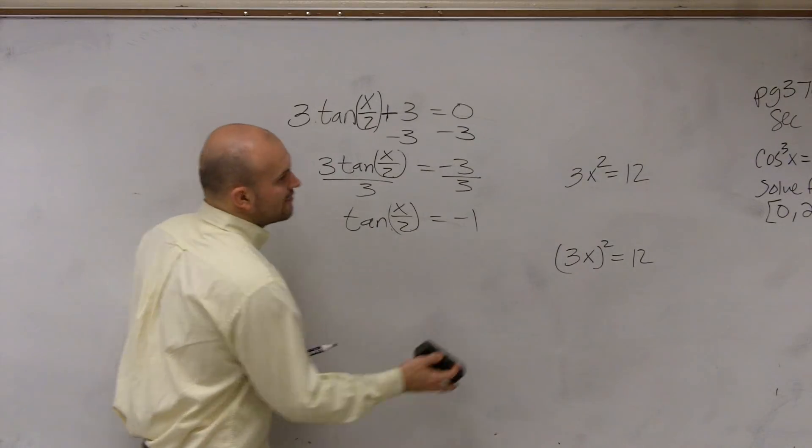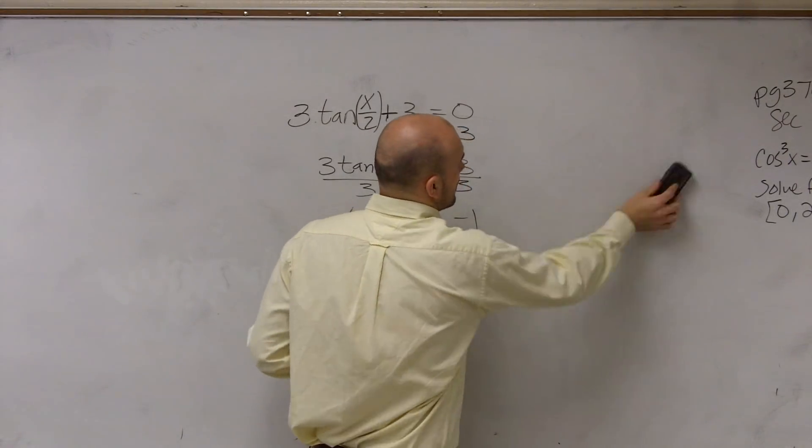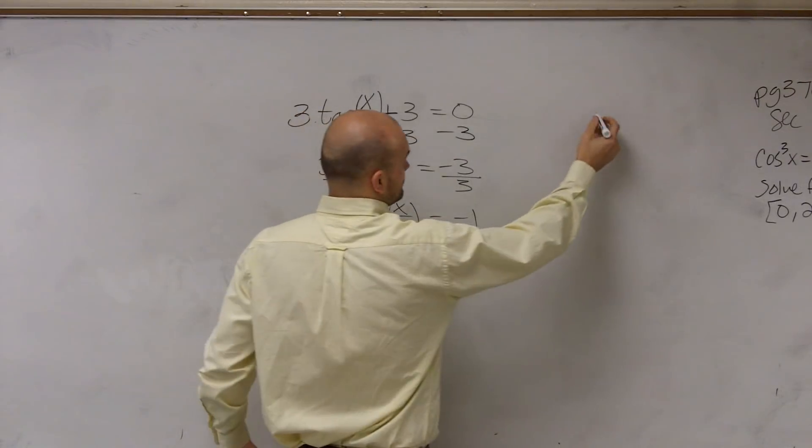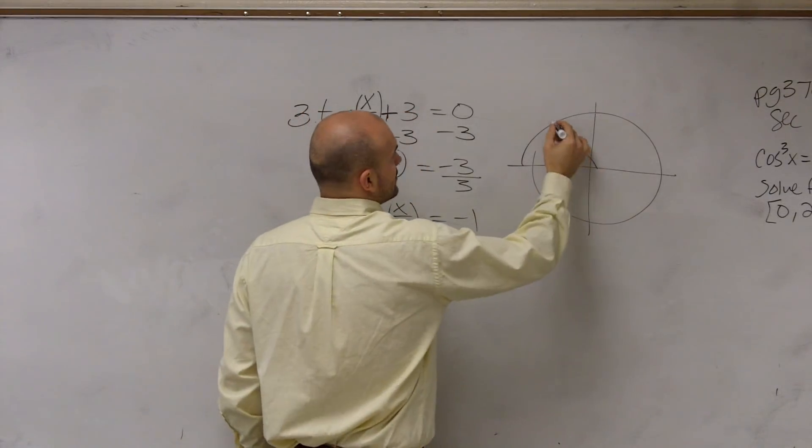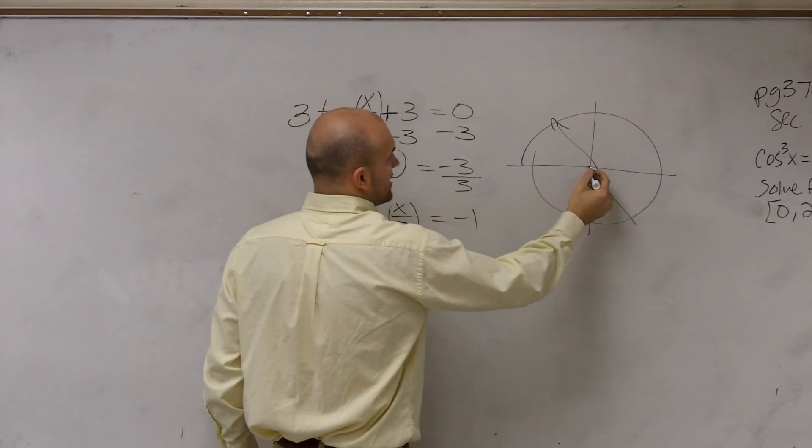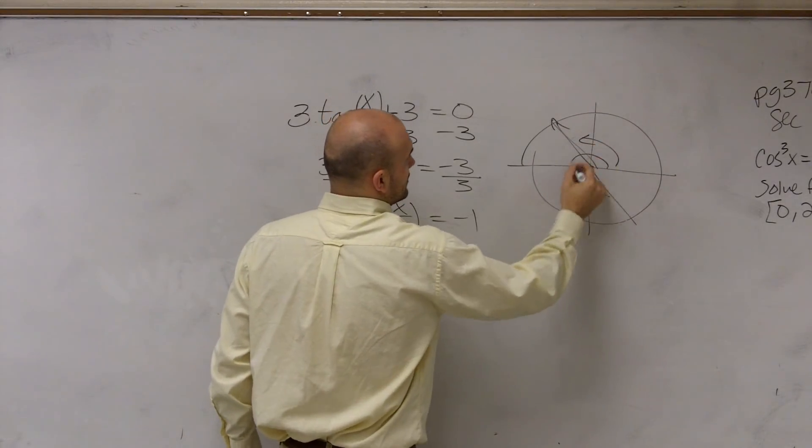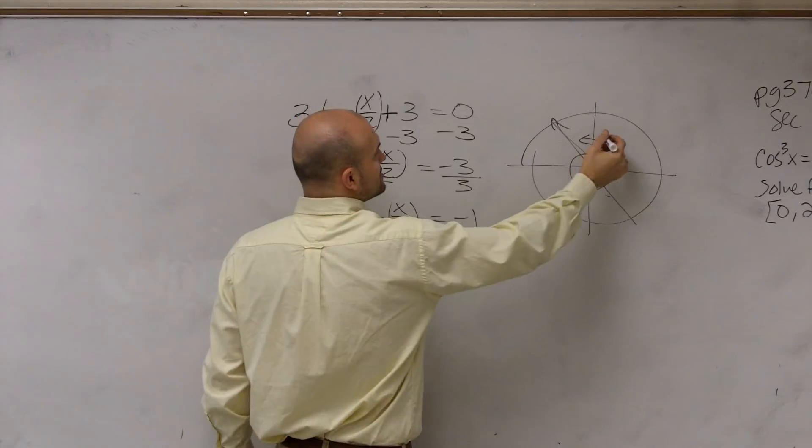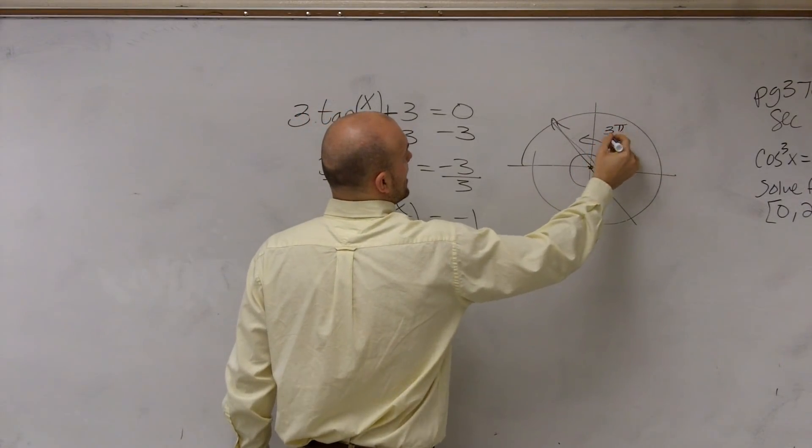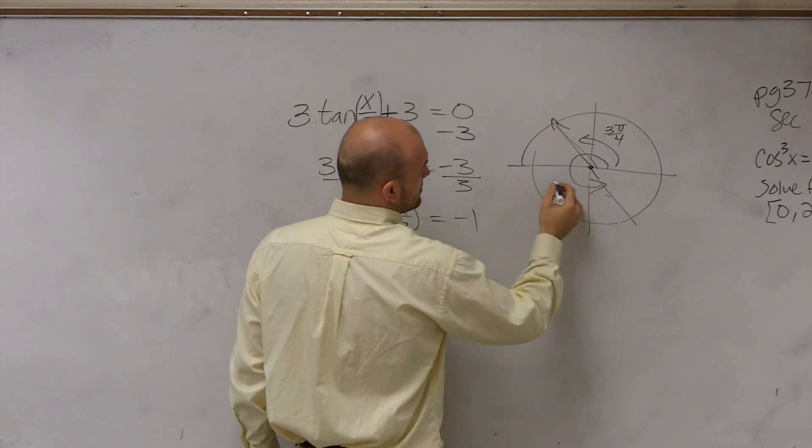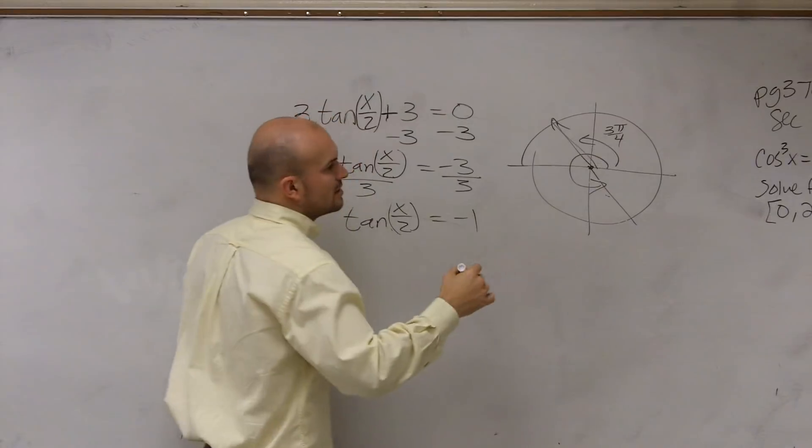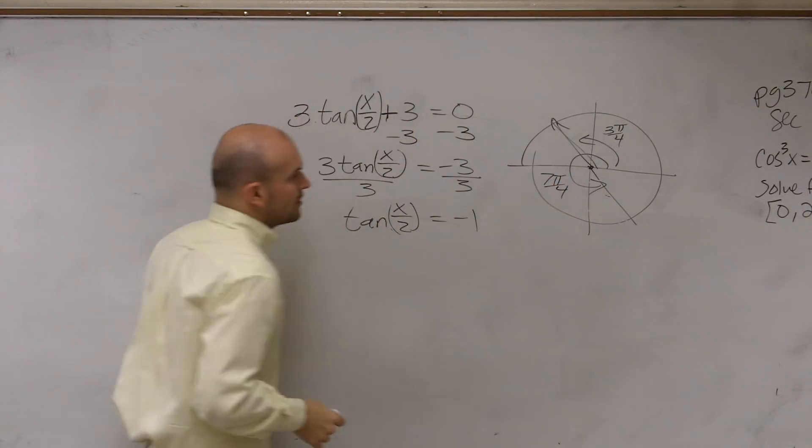So we don't have a constraint, but we look at when is tangent equal to negative 1, which we already previously looked at. And we said there's two angles. This angle and this angle, which this one is going to be 3 pi over 4. And then this angle was what we say was 7 pi over 4.